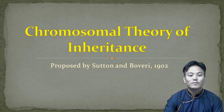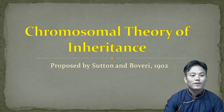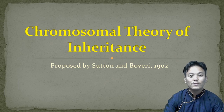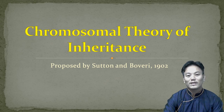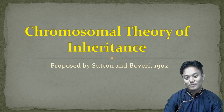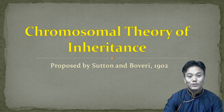Hello and welcome to class 12 biology. In this video we are going to discuss about the chromosomal theory of inheritance. This theory was proposed by Sutton and Boveri in the year 1902. Sutton and Boveri were the two people who proposed the chromosomal theory of inheritance.